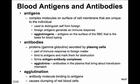Aglutinins are the antibodies found in plasma that bring about transfusion mismatches. Agglutination is when an antibody molecule binds to antigens and causes clumping of the red blood cells.